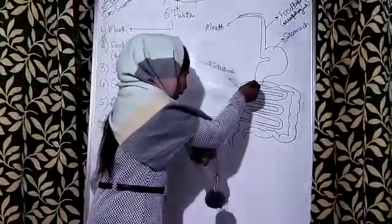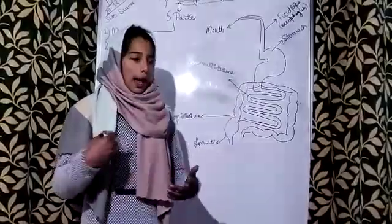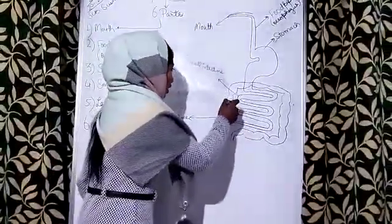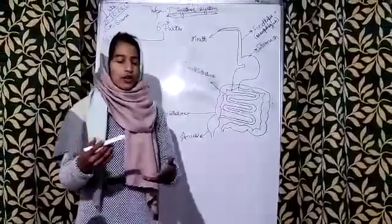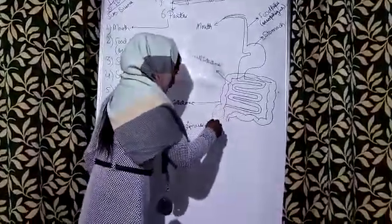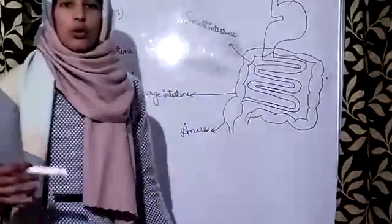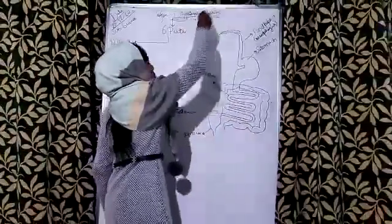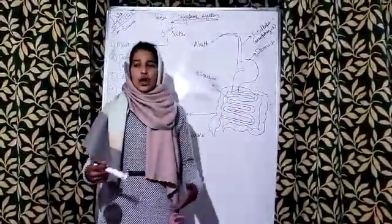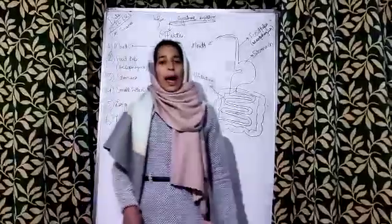In the large intestine, water is absorbed, and any remaining nutrients are also absorbed. Then the waste material or undigested food reaches to the anus. From the anus, we throw the waste material out of the body. So this was all about the digestive system and how digestion occurs in our body. Thank you, happy learning.